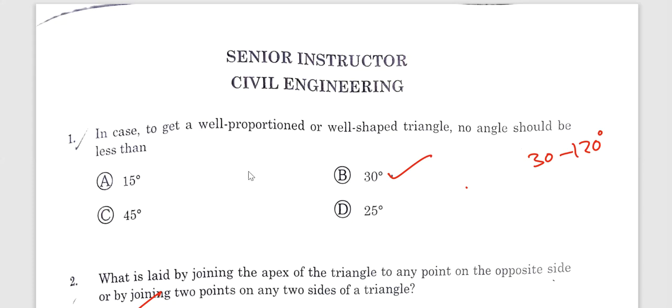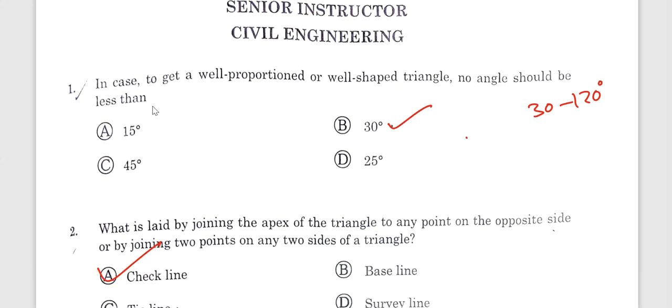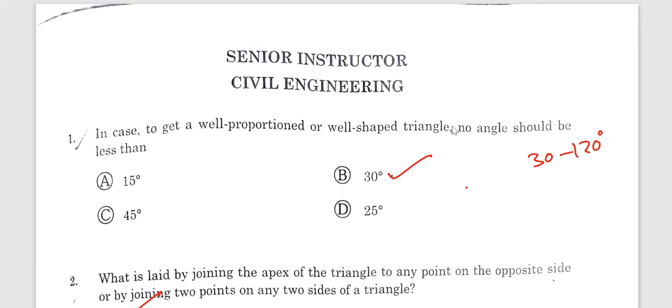My first question is: In case you get a well-proportioned or well-shaped triangle, no angles should be less than. Generally, a well-shaped triangle range is about 30 to 120 degrees. So if you put a well-shaped triangle, you will not have angles less than 30 degrees. Option B will be correct.